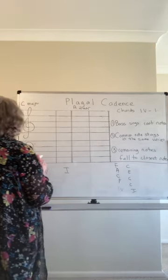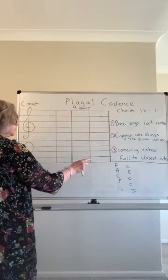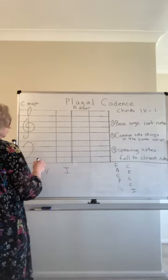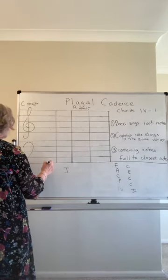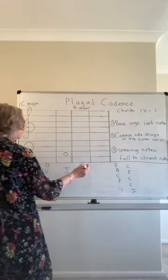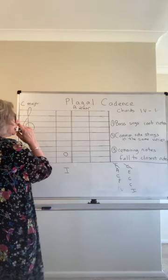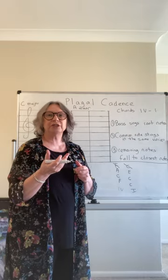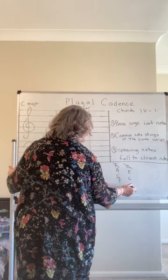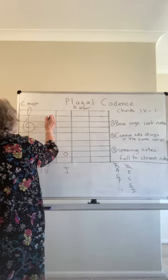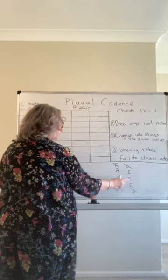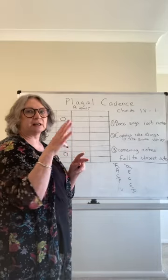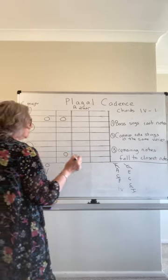C major has no sharps or flats in the key signature. The bass must sing the root note of the chord — no choice there — so we have F followed by C. We'll use a low F to give more room above. The second thing to look at is keeping the common note in the same voice; this gives a smooth progression. The common note C stays up in the soprano.